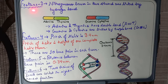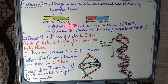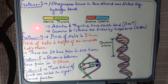Feature 3 states that the nitrogenous bases are present between the two strands, as you can see in the diagram. These nitrogenous bases are linked by hydrogen bonds. Adenine and thymine have a double hydrogen bond, while guanine and cytosine have a triple hydrogen bond.